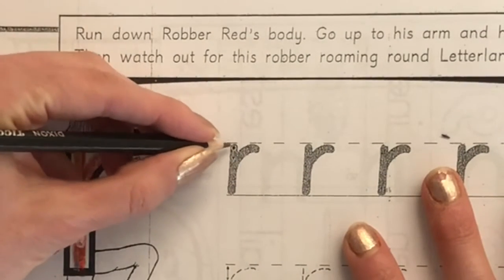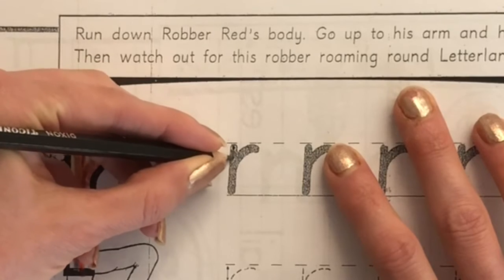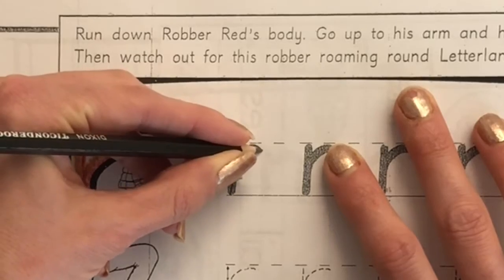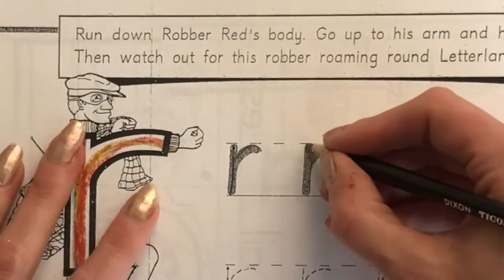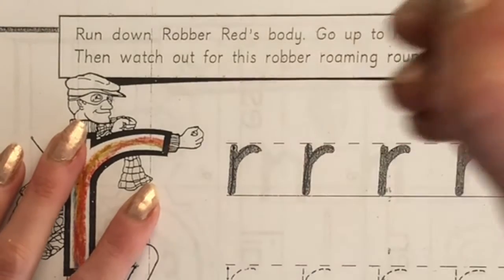We are going to start by tracing. Start at the dotted line. I'm going to go down and bounce back up without stopping and then turn and make the arm and then lift the pencil. Going to run down the body. Bounce back up and lift the pencil.